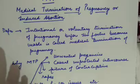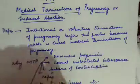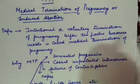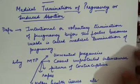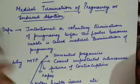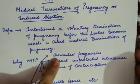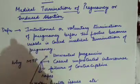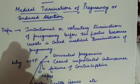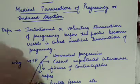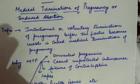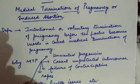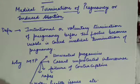So that's why MTP is needed. Why do we need MTP? There are some reasons. The first reason is unwanted pregnancies — if someone already has a proper family and they have an unwanted pregnancy, they may want to abort it. Second, casual unprotected intercourse: sometimes people have unprotected intercourse leading to pregnancy, which can also be addressed by MTP.